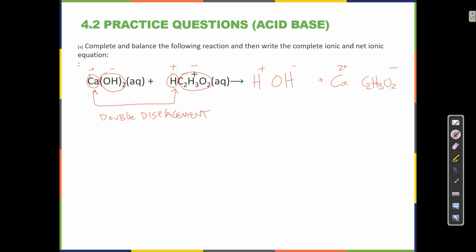So H+ and OH-, what does that make when it comes together? HOH, which is also called H2O, which is a liquid. And here, calcium 2+ and acetate C2H3O2. We're going to do the switcheroo. The one is going to come down here and become the subscript of calcium, and the two is going to come down here and become the subscript of acetate. So I need to put parentheses and put a two over here.